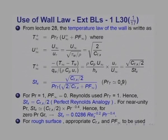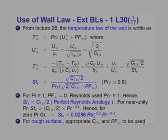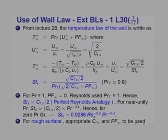The turbulent Prandtl number Pr_T is approximately 0.9 (some take 0.85), and can also be made a function of Prandtl number. For Prandtl number equal to 1, P_f_infinity = 0. Reynolds used Pr_T = 1, giving St_x = C_fx/2, implying perfect analogy between heat and momentum transfer. From experiments for near-unity Prandtl numbers, St_x correlates as C_fx/2 · Pr^(−0.4), giving St_x = 0.0286 · Re_x^(−0.2) · Pr^(−0.1) for a zero pressure gradient boundary layer — the correlation used routinely in undergraduate work, now shown derivable from the temperature law of the wall.